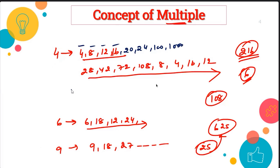Like if you are writing the table of four, whatever you write after four — all these are the multiples of four. If you are writing the table of 17, it means 17, 34 — all these are the multiples of 17. Similarly, what is the multiple of six? Six, 12, 18, 24. What is the multiple of nine? Nine, 18, 27. So these are called multiples.